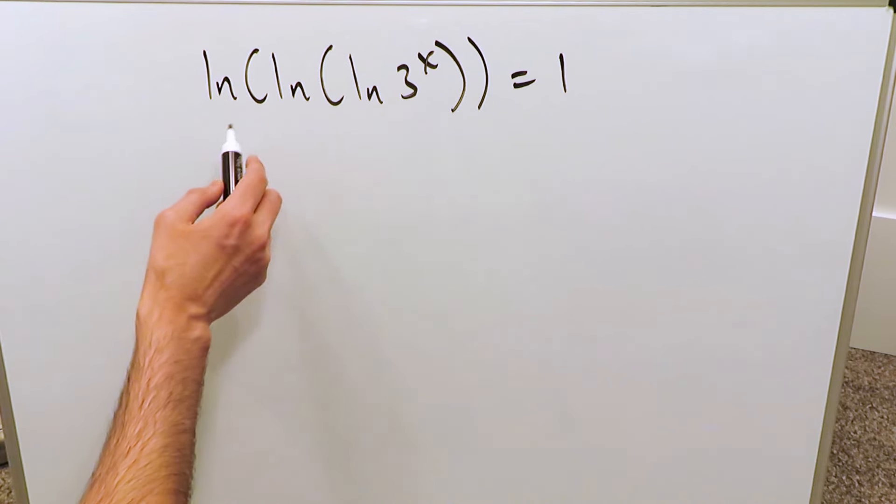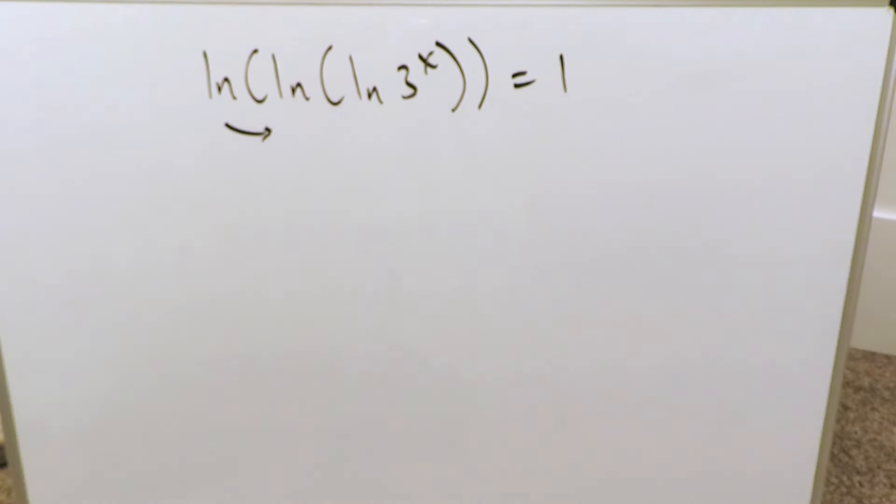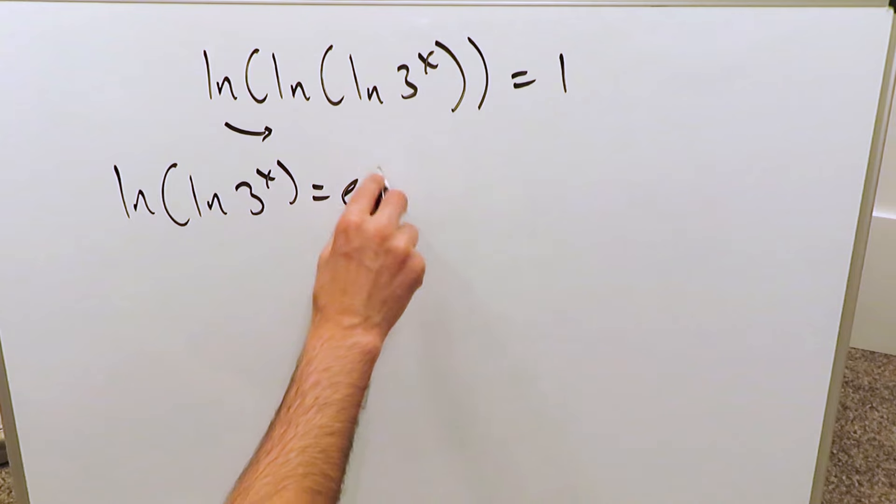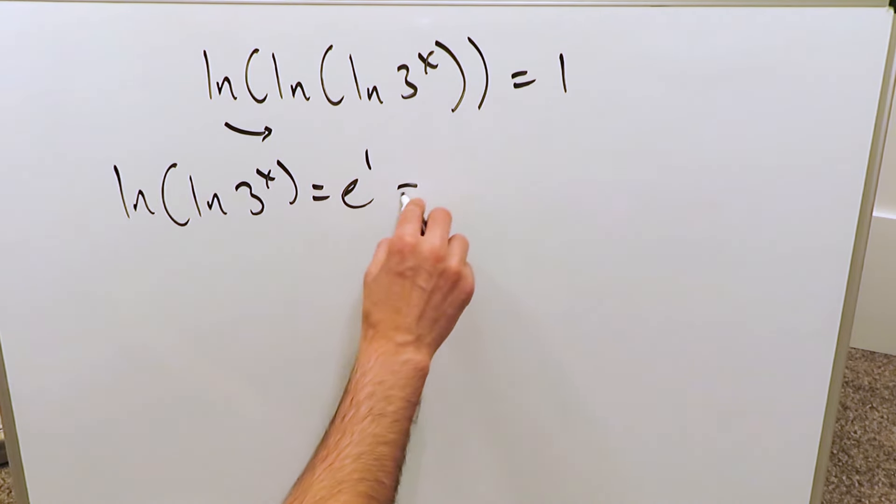You're going to sequentially take these natural logs on the other side and let's start with this one. When you take a natural log on the other side of the equal sign, it will become an exponential function. We will have here natural log of natural log 3 exponent x is equal to e exponent 1, which you know is equal to e.